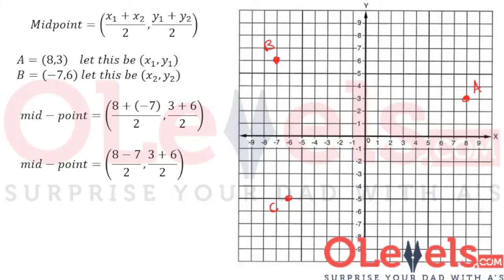What is 8 minus 7? 8 minus 7 is 1. What is 3 plus 6? 3 plus 6 is 9. So this becomes 1/2 and 9/2. 1 over 2 is the same as 0.5, and 9 over 2 is the same as 4.5. So the midpoint between point A and point B is (0.5, 4.5).